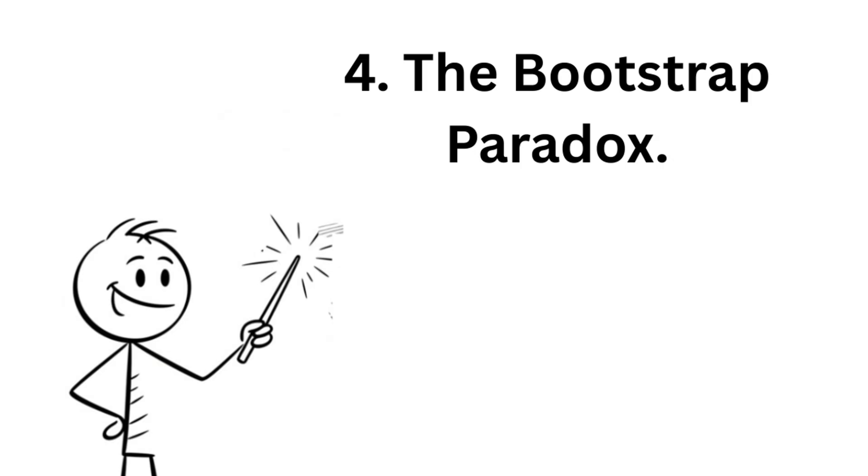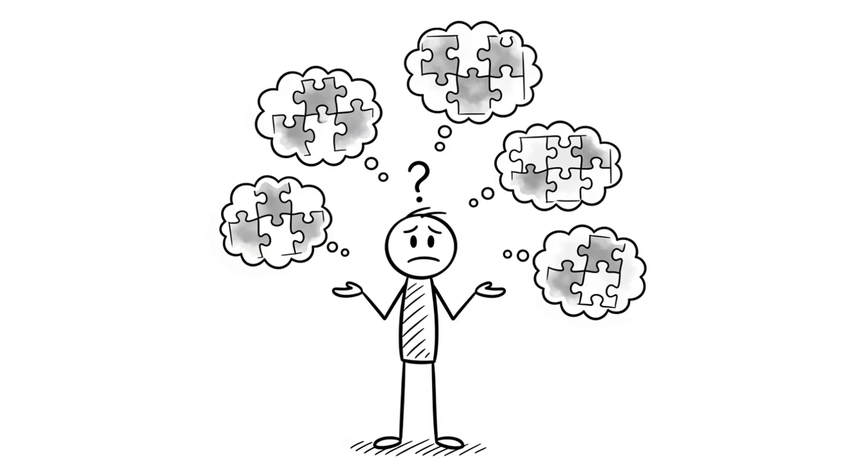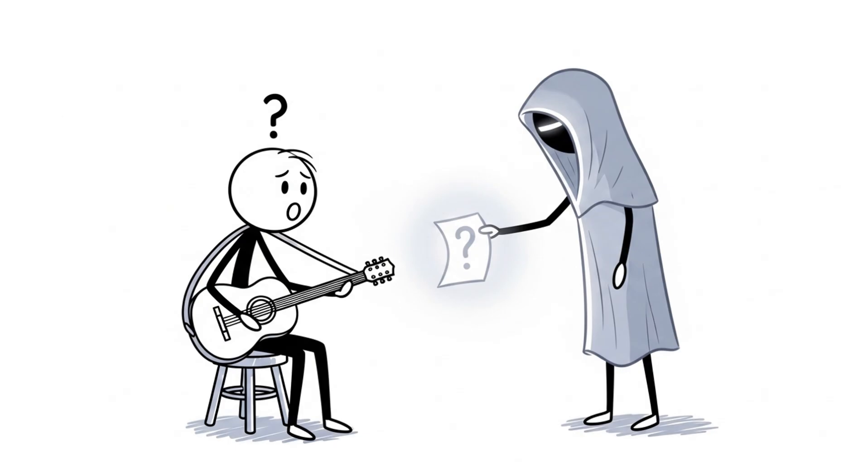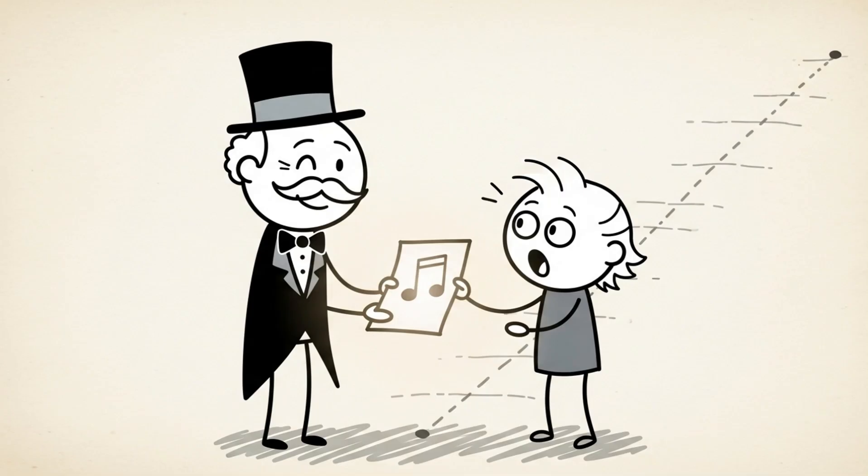Number 4. The Bootstrap Paradox. Another time-twisting puzzle is the Bootstrap Paradox. Picture this: you're a musician. One day, a stranger hands you sheet music for a beautiful song. You play it, become famous, and years later, you travel back in time and give that same music to a younger version of yourself.